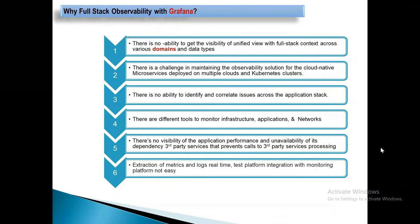What are the gaps that have been filled with observability using Grafana? For instance, assume there is no ability to get a complete visibility with a single pane of view, where you want to get complete insights and visibility on the full stack across various domains. Right now there are six to seven domains and different data types. That's where we are bringing in Grafana in order to get a view on that.